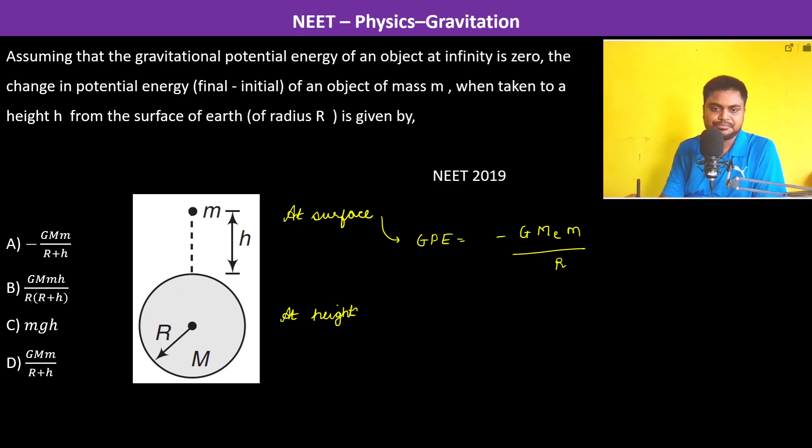At height h, the gravitational potential energy will be minus G M_e m divided by R plus h. So therefore, change is equal to minus G M_e m...